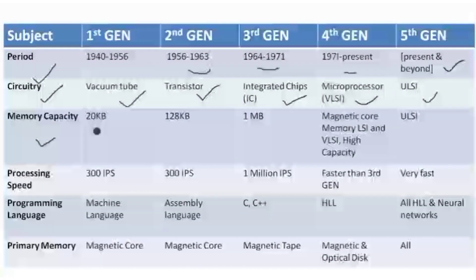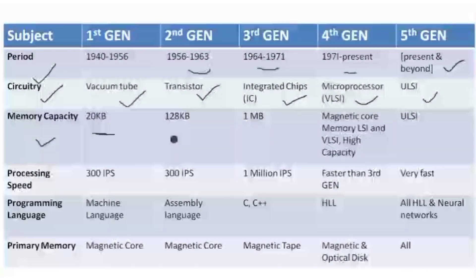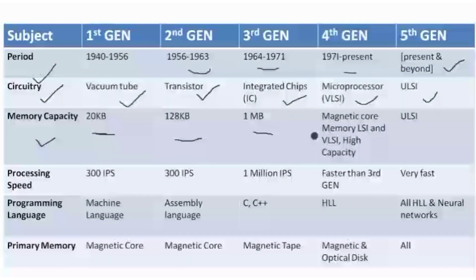Next is memory capacity. In the first generation, storage size was very small — we could only store 20 KB of data. In the second generation it more than doubled to 128 KB, which was still very limited. In the third generation it became 1 MB.